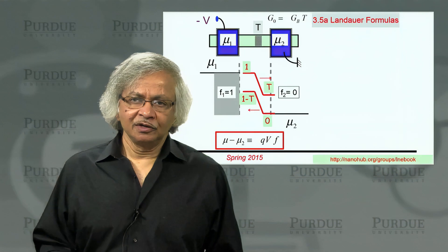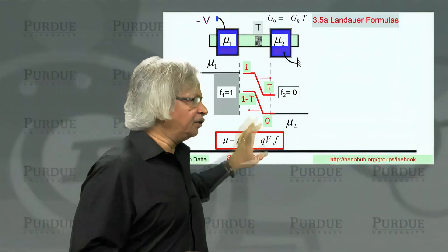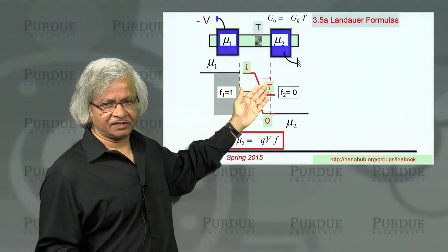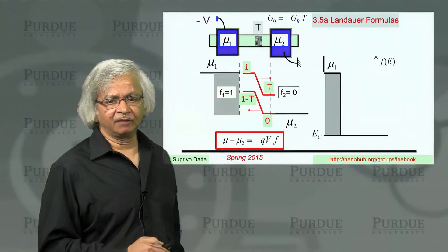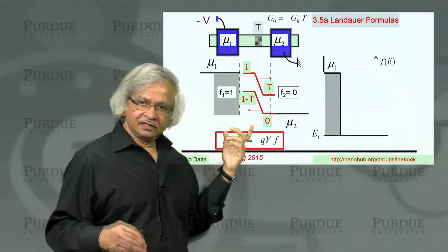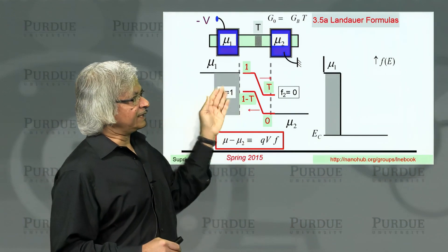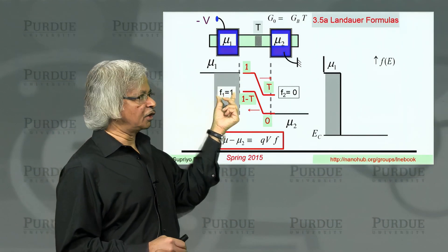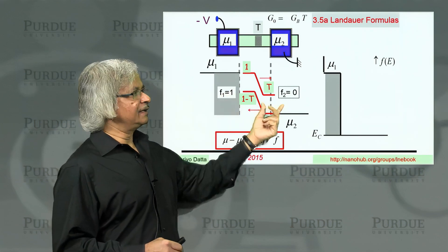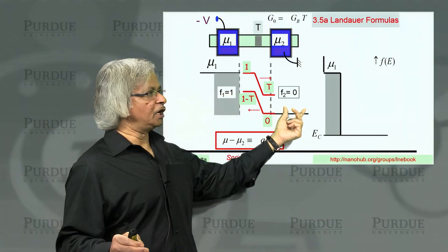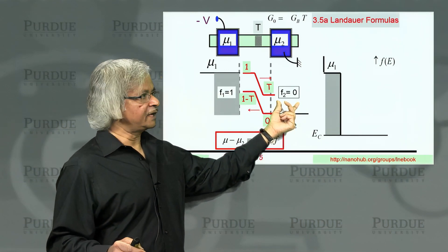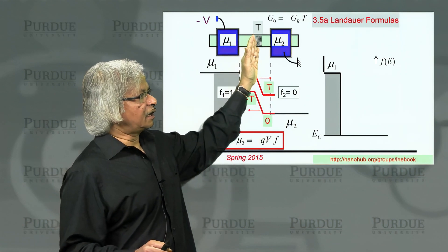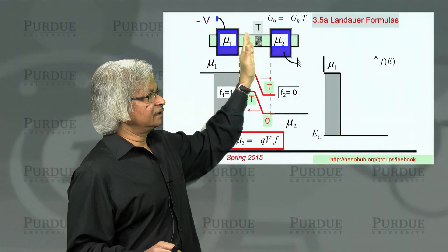Now what we have really plotted here, and this is the point I want to stress, is actually the occupation of the states. The way one should think about it is, as we discussed in a previous lecture, in this energy range the states in this contact are all filled, so the occupation is 1. Here the states are all empty, so the occupation is 0.